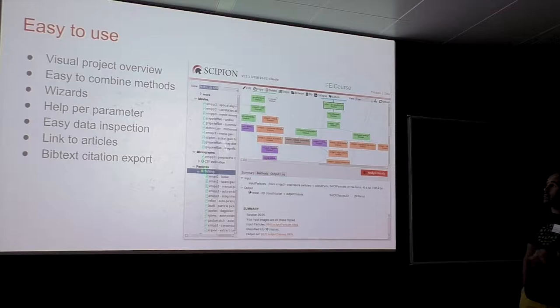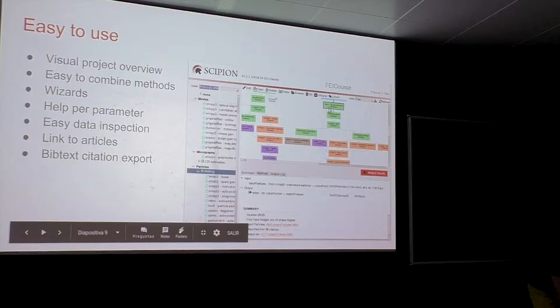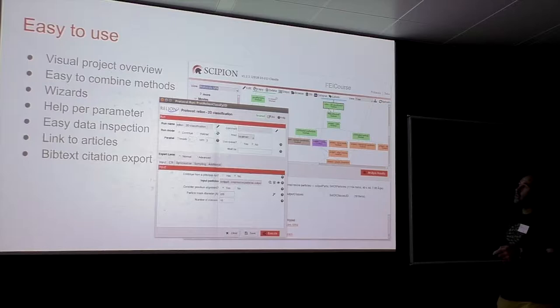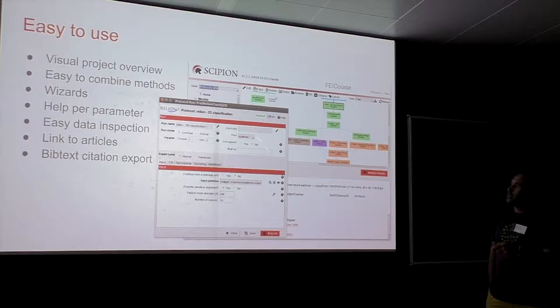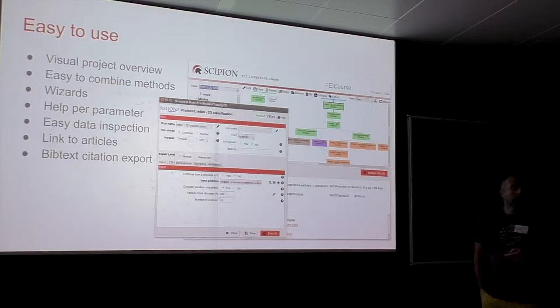You have a list of all available methods you can use. You're presented with a summary of what is selected — for Relion 2D classification, for example, you see a summary of input, output, and results. When you click on one of these boxes, you see the parameters for that specific step — a general section common to all boxes, and a specific section for the 2D classification parameters.